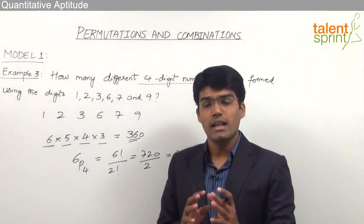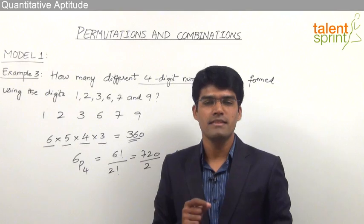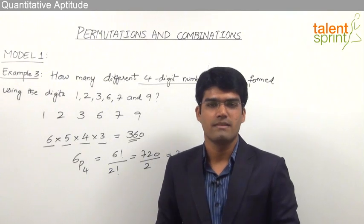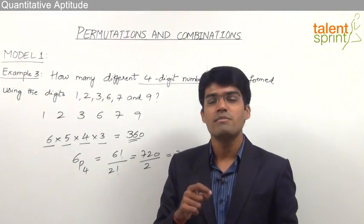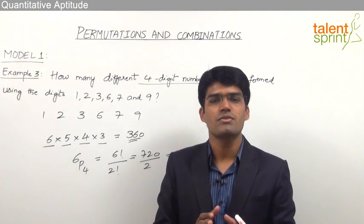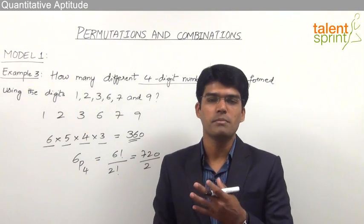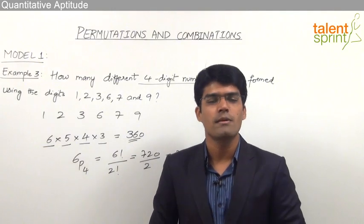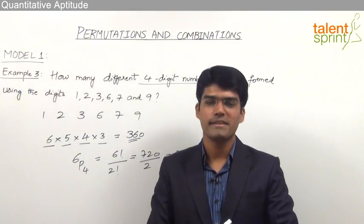One very important point from the various examples in model one is that objects can be of any type. In example one the object was persons in a straight line; in example two the objects were letters of the word BANKER; and in example three the objects were digits used to form different numbers. So when we say permutations of n objects taken r at a time given as nPr, the objects can be persons, letters, or numbers — the concept of finding permutations remains the same, using either the principle of multiplication or nPr.